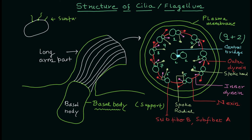Let me clarify again that in the case of prokaryotic cells you don't have cilia, and the structure of flagellum is quite different from the eukaryotic cell. In the case of eukaryotic cells, this is the structural arrangement of the cilia and flagellum.